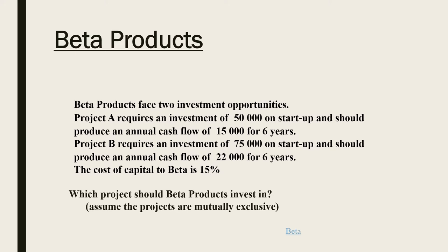Assume the projects are mutually exclusive. What that means is that you have to choose A or B, because otherwise you might do them both. But many projects — you're either going to build with a nuclear power station or it's going to be coal fired; you're not going to do both. You can pause the video and try this because you should be able to do this type of problem. It's pretty simple in Excel.